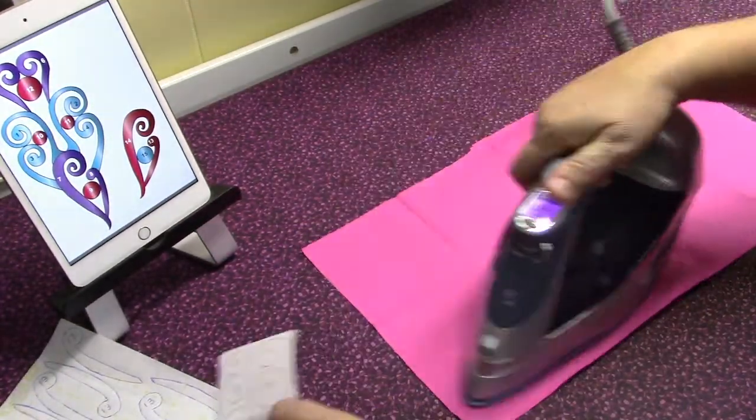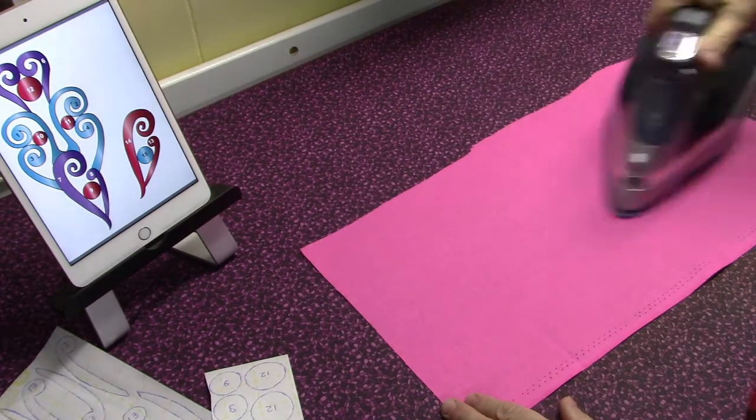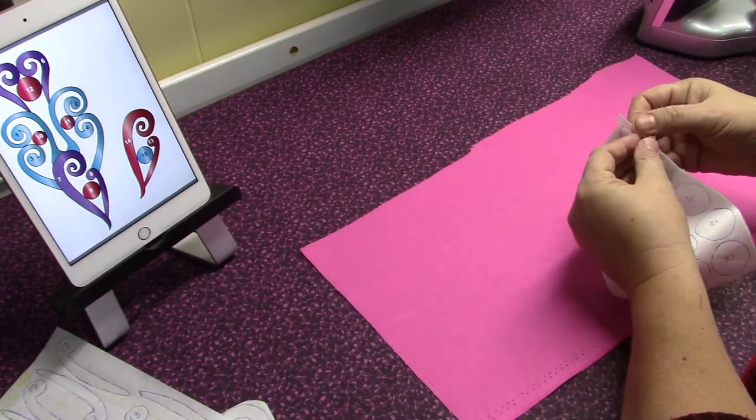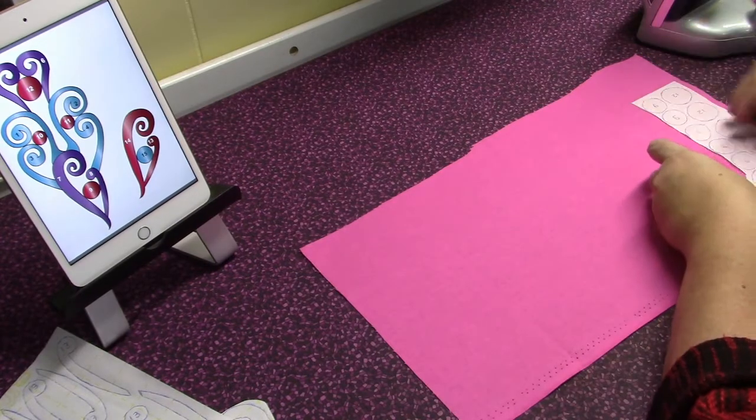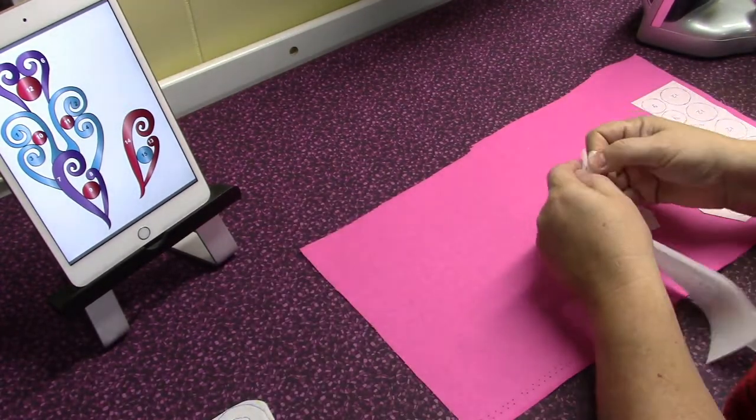It's now time to start making the raw edge applique. Begin by ironing the fabric and placing it wrong side up. Take off the protective sheet with no drawings and place the fusible side directly on the fabric.